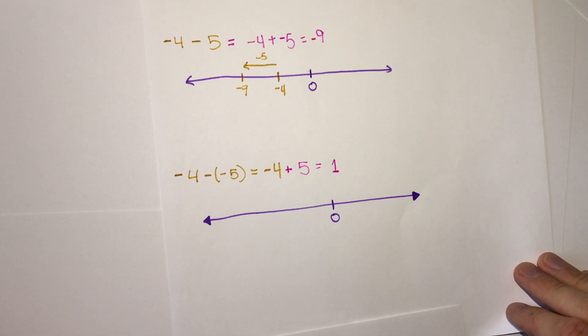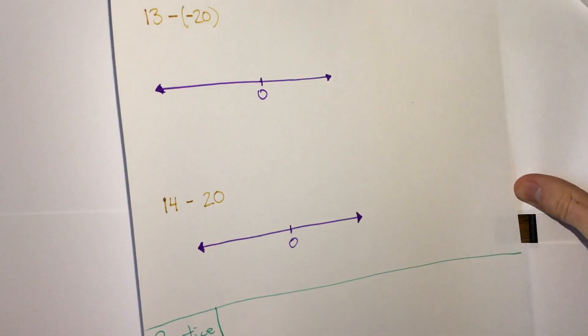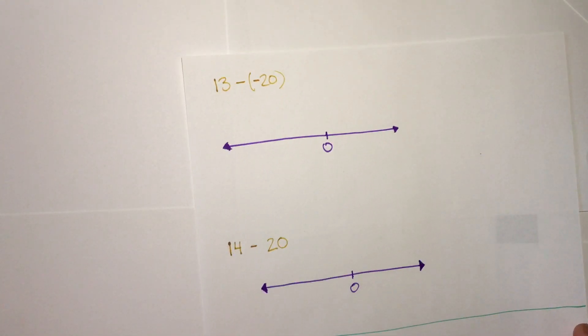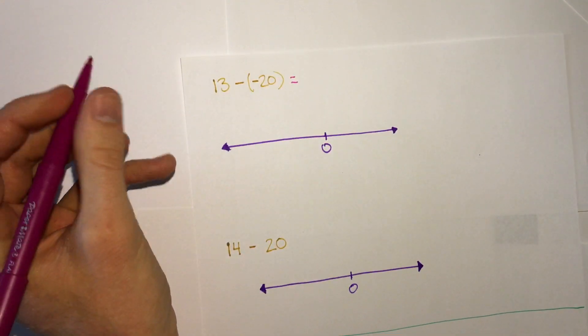Let's look at two with some bigger numbers using those strategies. So 13 minus negative 20. We will keep, change, change.